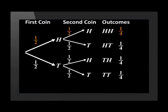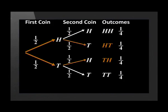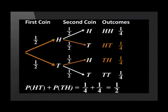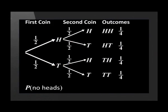Similarly, we can work out that the probability for each outcome is one-quarter. For part A, the probability of getting a head and a tail in any order covers the outcomes head-tail or tail-head, which is one-quarter plus one-quarter, equalling one-half. For part B, the probability of getting no heads is the outcome tail and tail. Therefore, the probability of no heads is one-quarter.